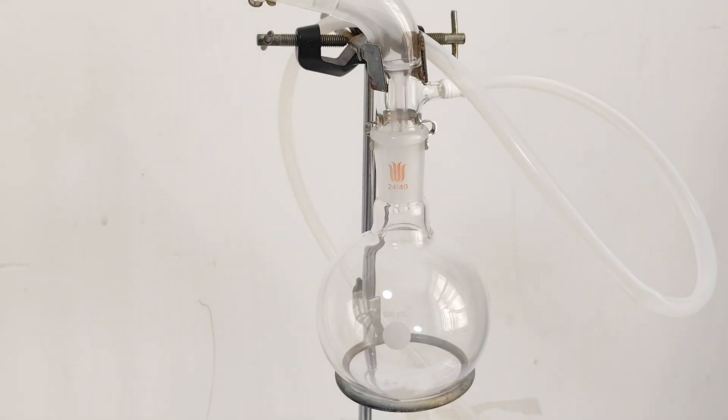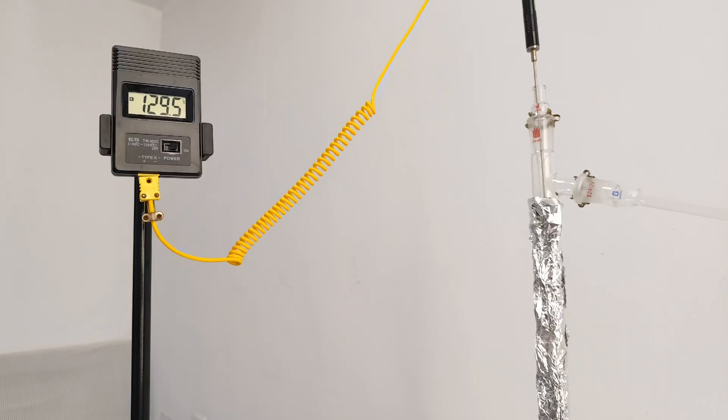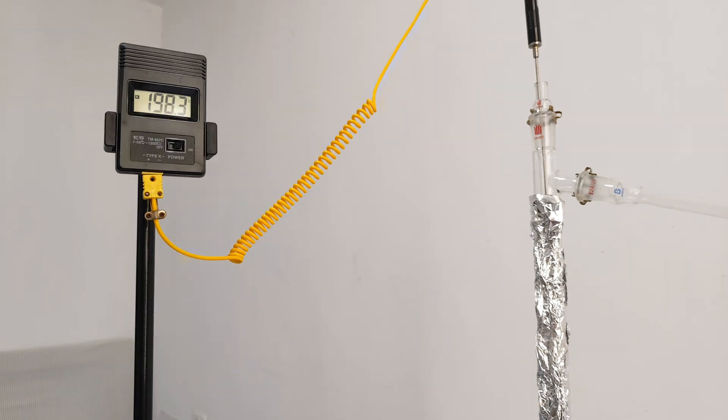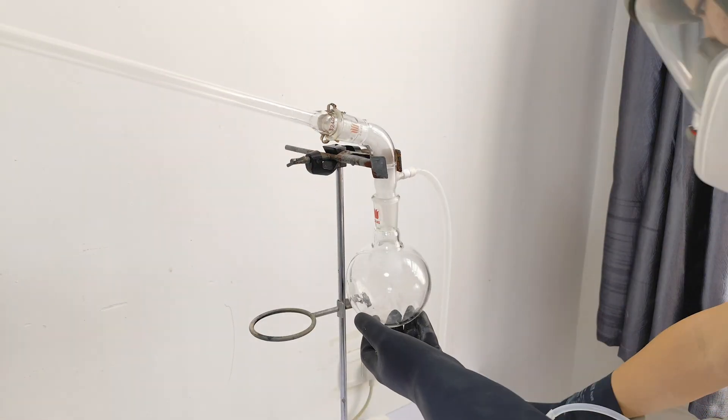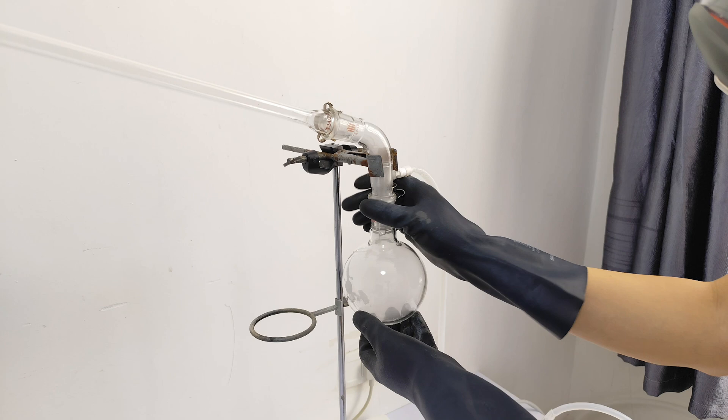Meanwhile, some liquid is coming out and getting into the receiving flask. But the thermometer shows that the boiling point of the liquid is only about 130°C, which means the liquid is probably just some water. About half an hour later, the temperature climbed up to about 330°C and stayed. So I changed the receiving flask to a new one to collect the part with higher boiling point.